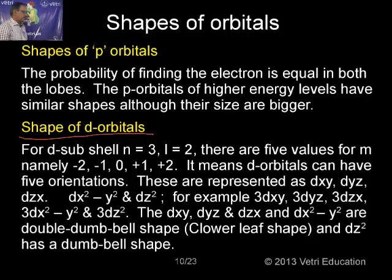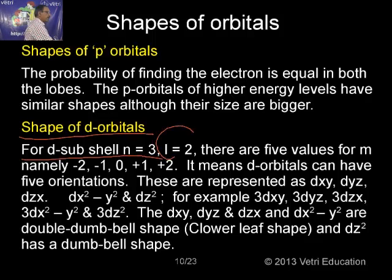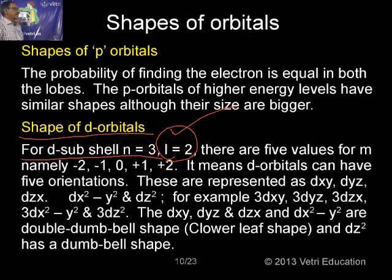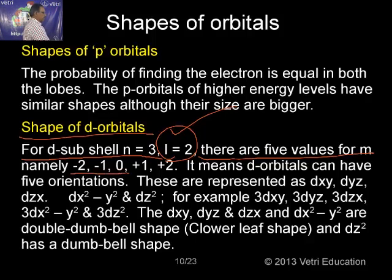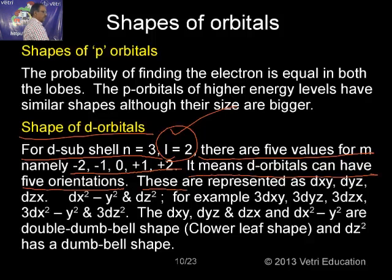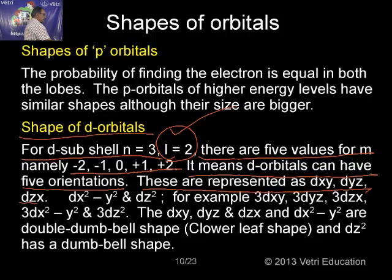Now for the shapes of d orbitals. For the d subshell, n = 3 and l = 2. When l = 0, s orbital (spherical); l = 1, dumbbell; l = 2, double dumbbell. There are 5 values for m: −2, −1, 0, +1, +2, meaning the d orbital can have 5 orientations: dxy, dyz, dzx, dx²−y², and dz².